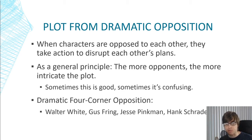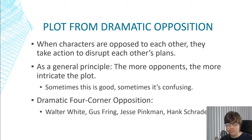An example of a dramatic four-corner opposition would be Walter White, Gus Fring, Jesse Pinkman, and Hank Schrader in Breaking Bad. All four of these characters oppose each other in various ways. Hank Schrader is going after Walter White, but he's also trying to catch Gus Fring and Jesse Pinkman. Gus Fring uses Walter but also stands opposed to him in certain ways, and he's certainly opposed to Hank. So each of these characters has a very interesting relationship in their opposition.